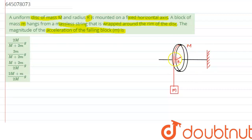There is a string that has been wrapped around the rim of the disc, and a mass of small m is hanged from it. We are interested in finding the acceleration of the block m. Let's suppose it is falling downward with acceleration a.